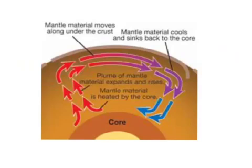Because the core is so hot, a plume of mantle material expands and rises because it is heated by the core, and moves along underneath the crust, moving tectonic plates, cooling down, and going back down toward the core, just to restart the cycle, called convection.